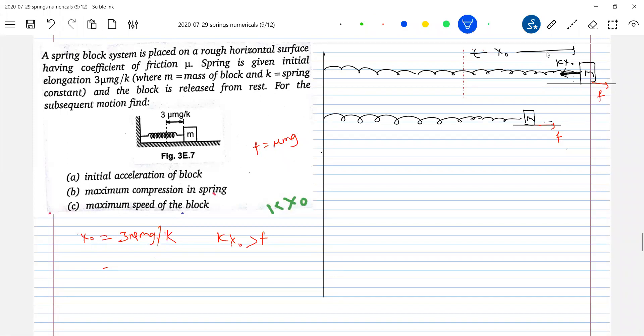So somewhere at the intermediate position it will have maximum velocity. Here the spring force will be equal to f. kx1 equal to f. So therefore, what is f? f is μmg. So therefore what is x1 equal to μmg by k. And now what will happen further. So it will keep on, it will attain the spring will attain natural length. Here also you check it. It will have some velocity.